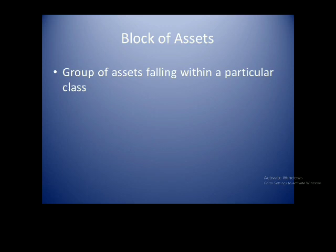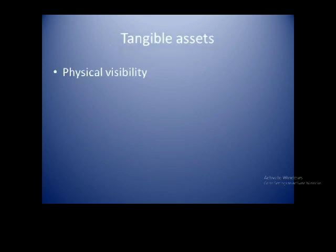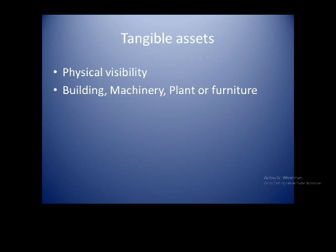We have two blocks of assets with similar characteristics. One is the tangible block of assets — they are called tangible assets. The other is the intangible block of assets. Tangible assets are physically visible — you can see them and touch them. Examples include building, machinery, plant, and furniture. These all form the tangible block.